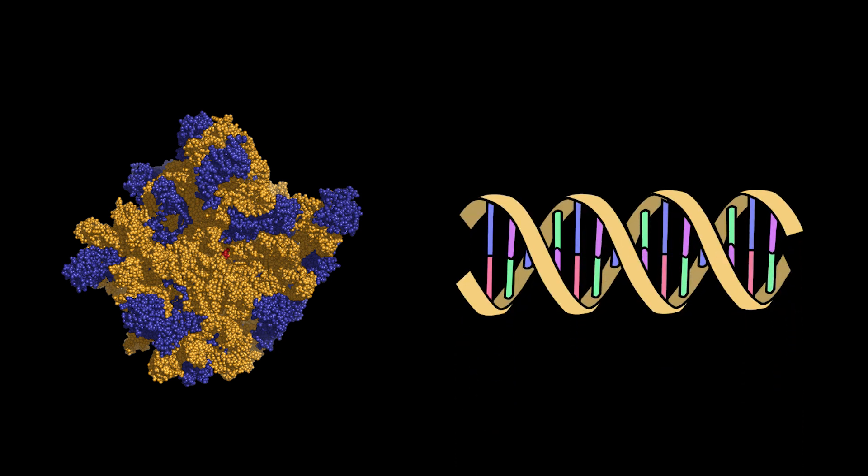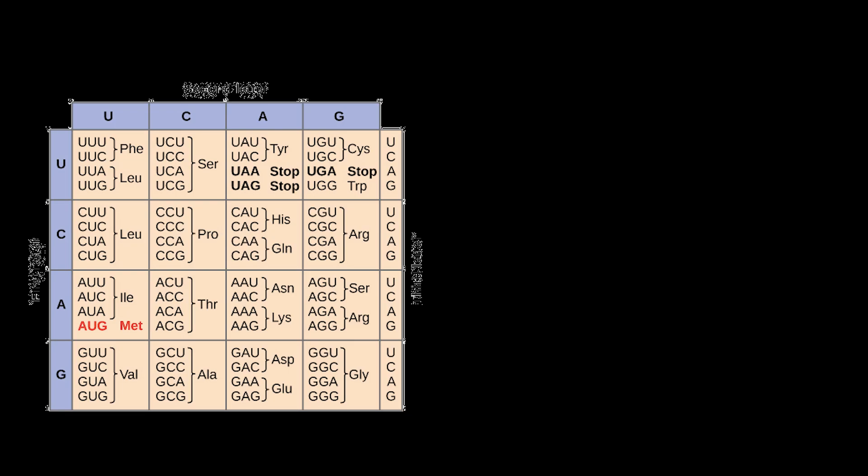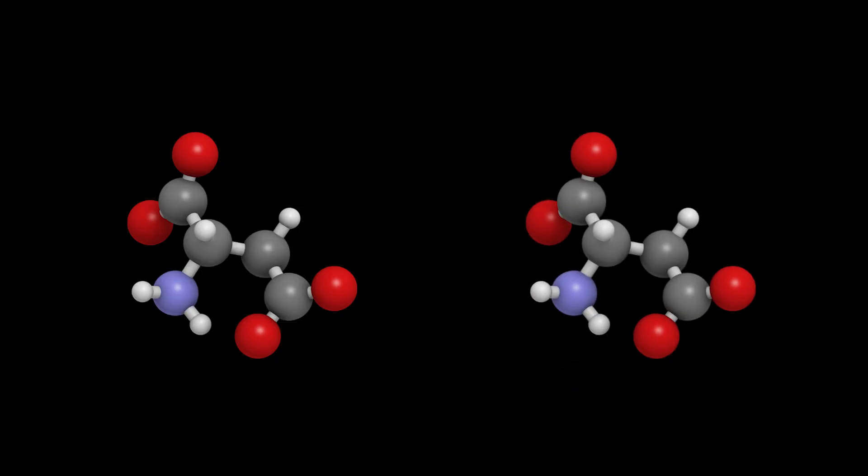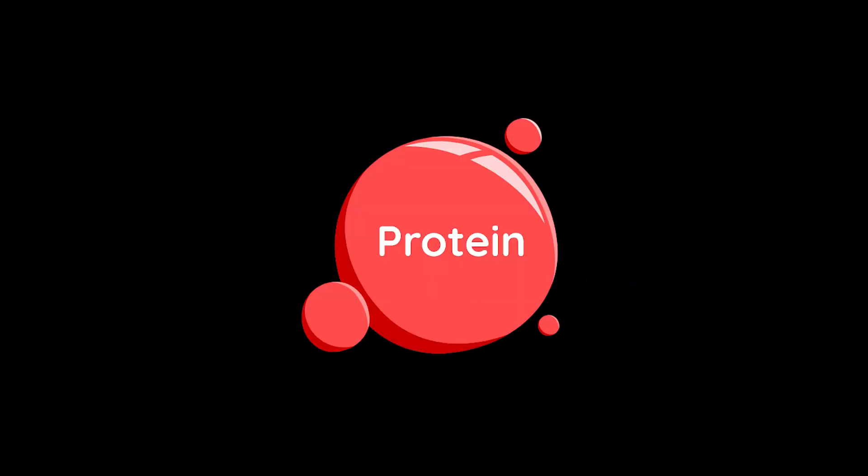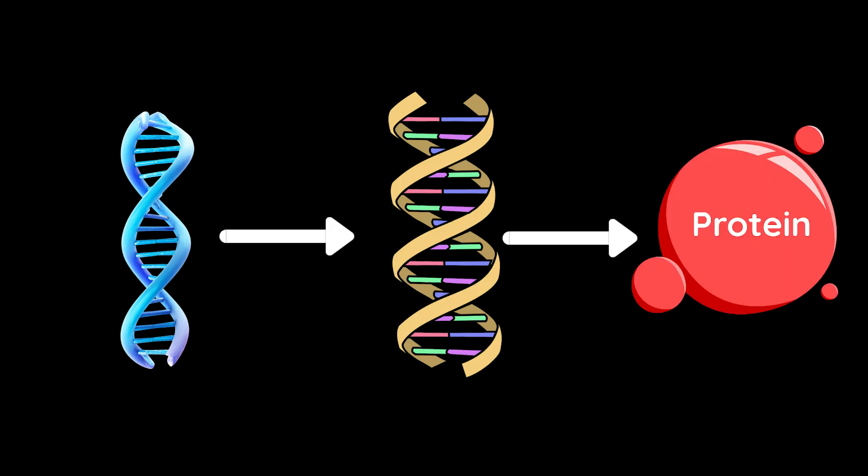Step 2. Translation. The mRNA moves to a ribosome, the cell's protein factory. There, the ribosome reads the RNA three letters at a time. Each three-letter sequence, called a codon, codes for a specific amino acid. Amino acids link together to form a protein. So, DNA, RNA, protein. This flow of information is the core of genetics. It's how genes become traits.